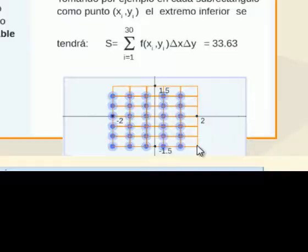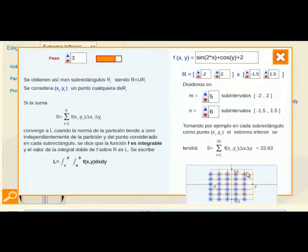La representación de esta partición la vemos aquí en la parte que estoy señalando donde se ve el intervalo dividido en 6 por 5, 30 rectángulos todos ellos de la misma dimensión o el mismo área.